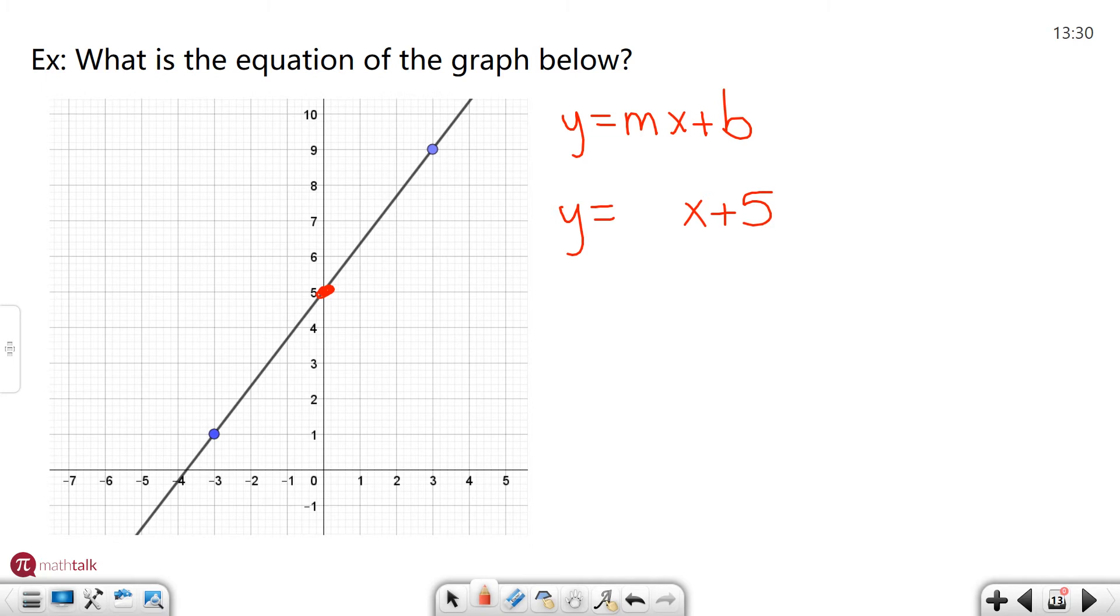Okay so y equals something x plus 5. I need to figure out my m. And remember with slope you can use the visual method of finding slope rise over run between two points. I can just take from my one point here and count how far do I rise? 1, 2, 3, 4. Over how far do I run? 1, 2, 3. My slope is 4 thirds and now my equation is y equals 4 thirds x plus 5.